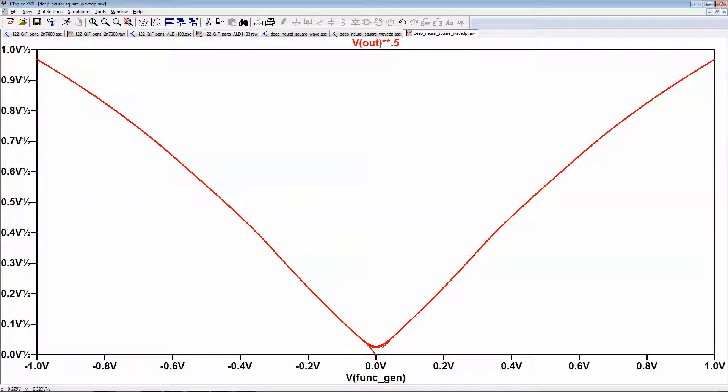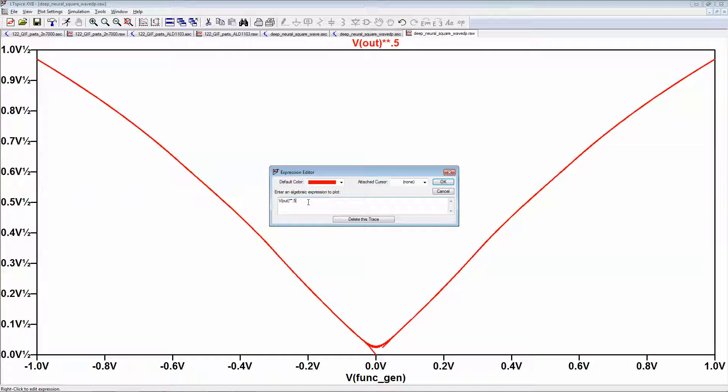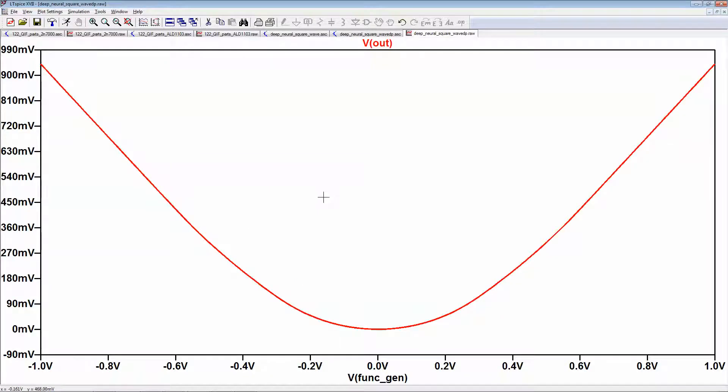So really we could probably get away with 0.4 maybe here, but here it's not truly squaring anymore. But the thing is, it is nonlinear, right? And in some ways almost any nonlinearity will get a neuron to spike.